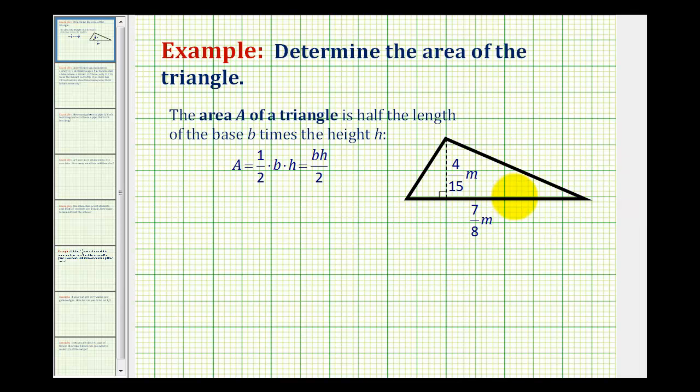We want to determine the area of the given triangle, and the formula for the area of a triangle is 1 half times base times height or base times height divided by 2.